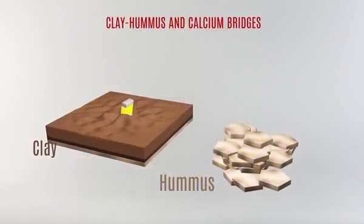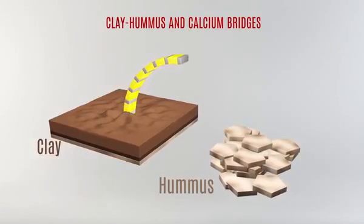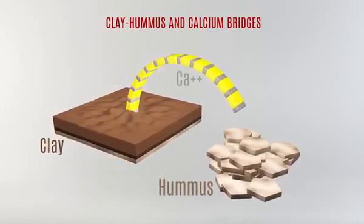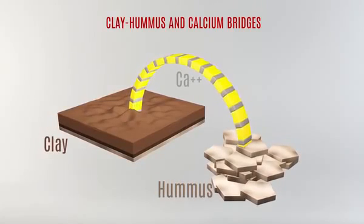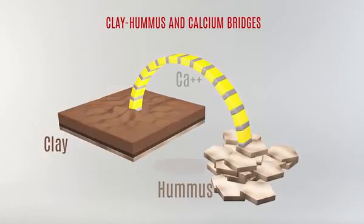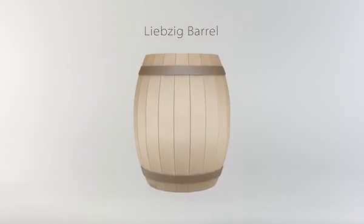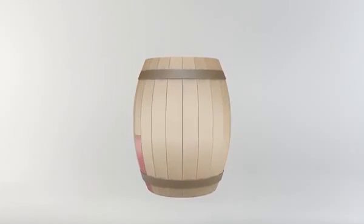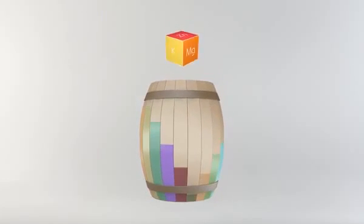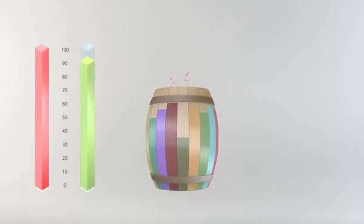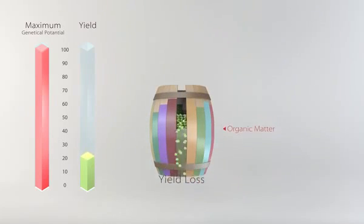Humic acids create calcium clay bridges in soil, increasing soil permeability and nutrient holding capacity. By just using fertilizers, we cannot reach maximum crop yields. For maximum yields, we need organic matter, humic acid, high cation exchange capacity, and biological activity.